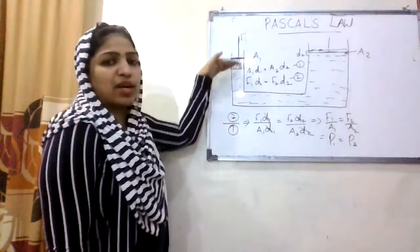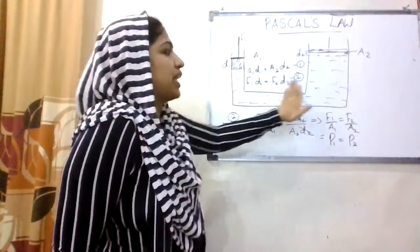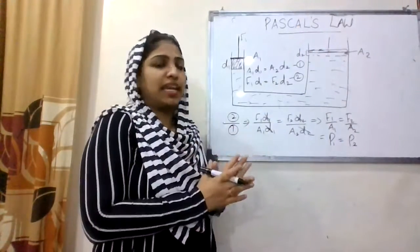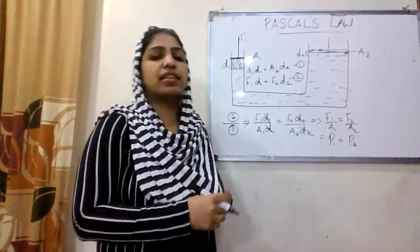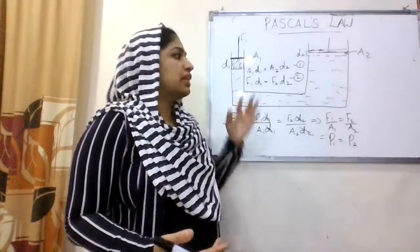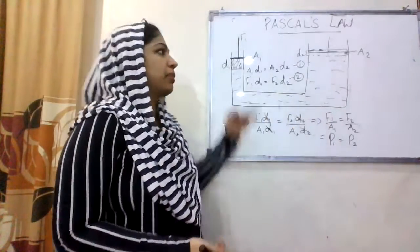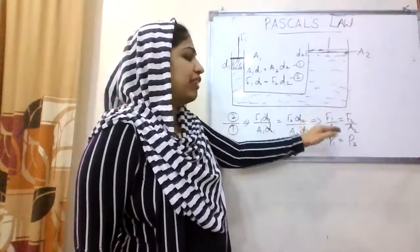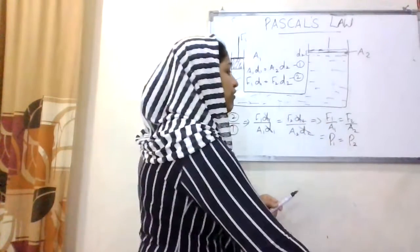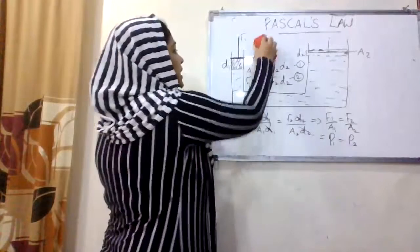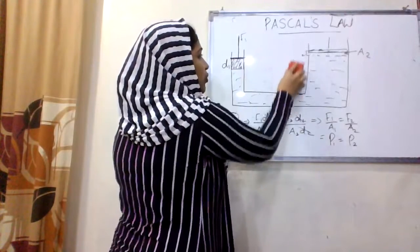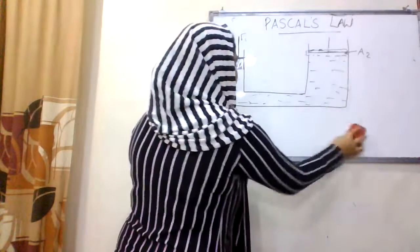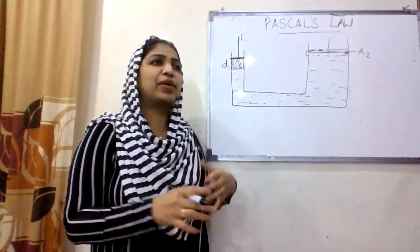Whatever pressure we apply to one side of the fluid, that will be equally distributed at all points. That is the statement of Pascal's law. P1 is equal to P2, and F1 divided by A1 is equal to F2 divided by A2. This diagram represents Pascal's law. One of the applications of Pascal's law is the hydraulic lift.